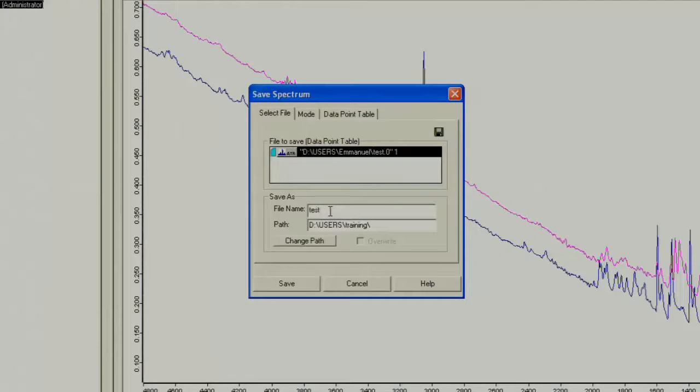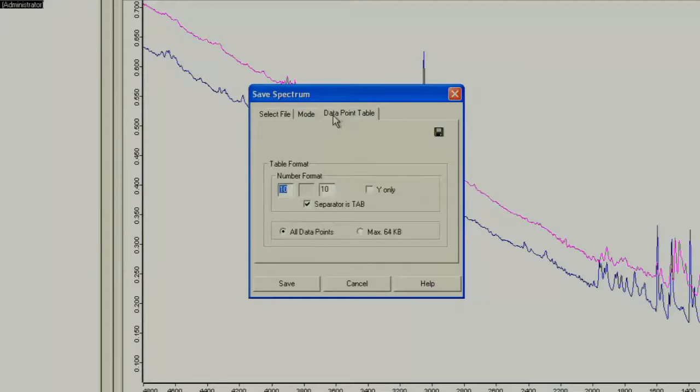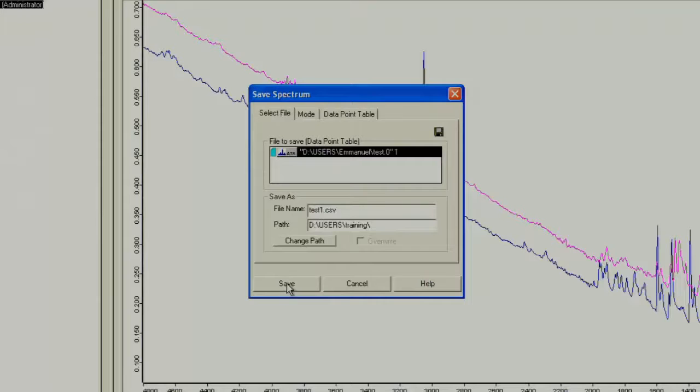Make sure you're saving it to the correct folder. Then click the mode tab, and make sure data point table is selected. Then in the data point table tab, change the separator from a tab to a comma. This will allow you to open the file as a CSV in Microsoft Excel. And then finally, click save.